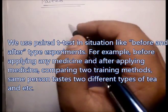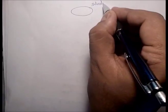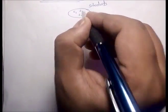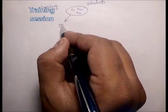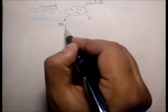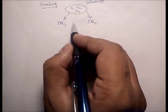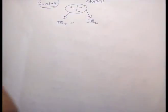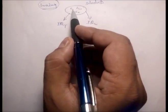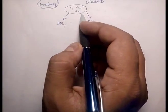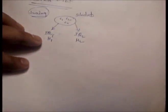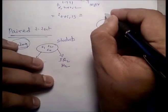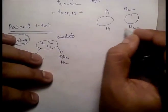Suppose a set of students are given a training session and we want to check whether the training is effective. Before applying the training, we check the IQ level of the students, and again after. From the difference in these two IQ levels we can determine whether the training session is effective. Here the population is the same — mu1 and mu2 are both taken from the same population, unlike the two-sample case.